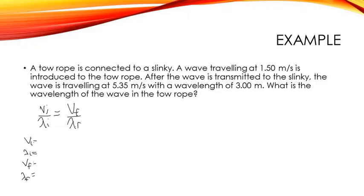So we have to figure out where it starts. So the wave starts in the tow rope and is transmitted into the slinky. So all of the initial velocities and the initial wavelength will be of the tow rope, and the final velocity and the final wavelength will be of the slinky.